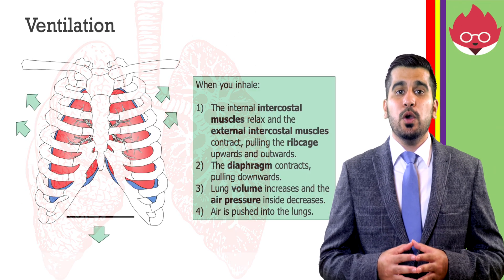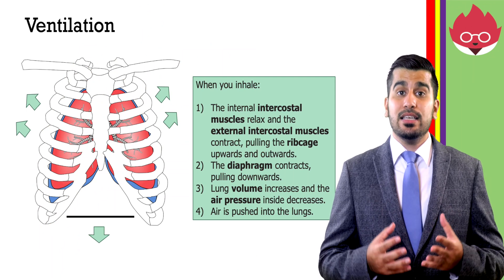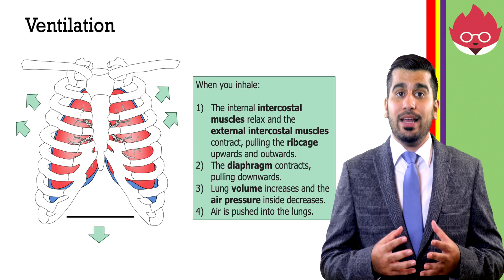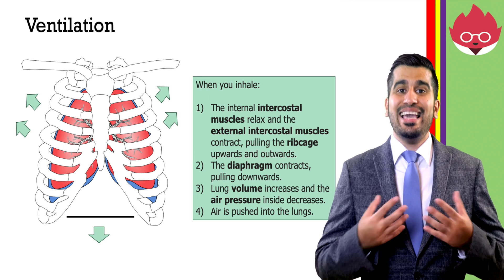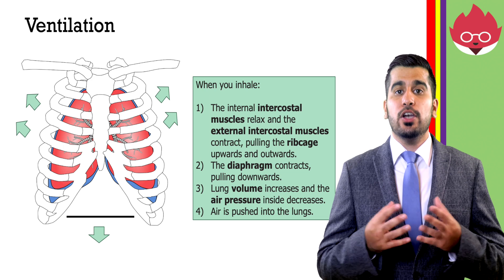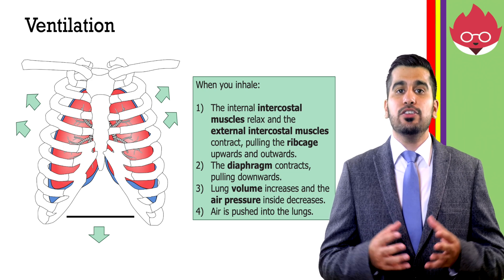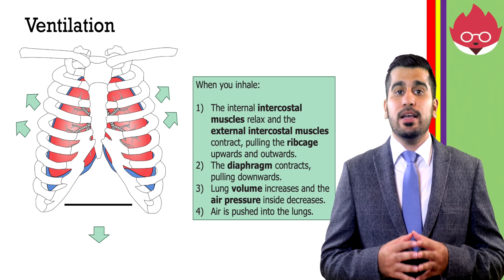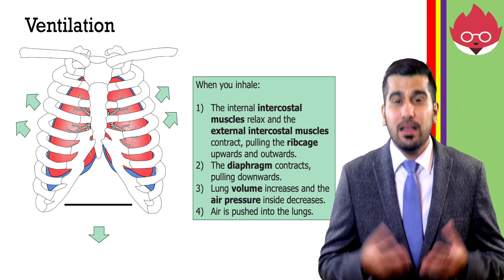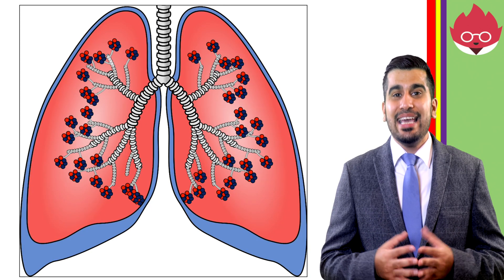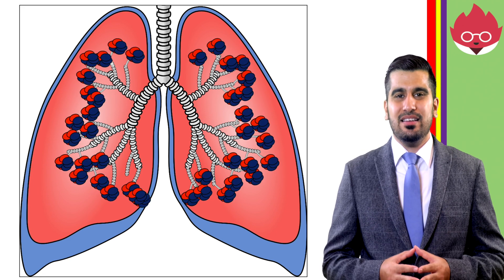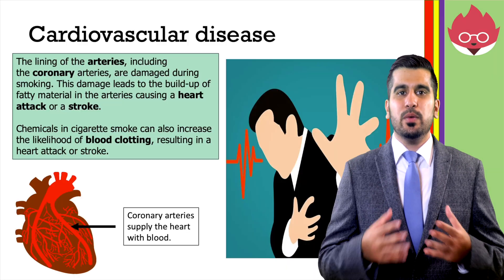For question 2, when you breathe in, the internal intercostal muscles found on the inside of the ribcage relax and the external intercostal muscles found on the outside of the ribcage contract, pulling the ribcage upwards and outwards. The diaphragm contracts and is pulled downwards. Lung volume increases and air pressure inside decreases. Air is forced into the lungs.